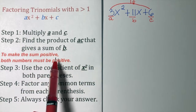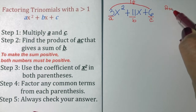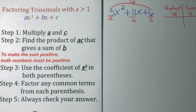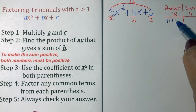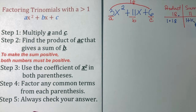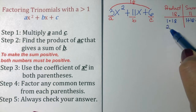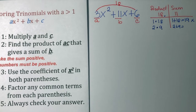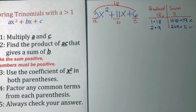Following step number 2, find the product of A and C that gives a sum of B. So, let us find the factor pair of 18 that gives a sum of B, which is 11. To make the sum positive, both numbers or factors must be positive as well. We have 1 times 18 is 18, and 1 plus 18 is equal to 19 — this is not the pair we're looking for. Next, 2 times 9, and 2 plus 9 is equal to 11. This is the pair that we are looking for.